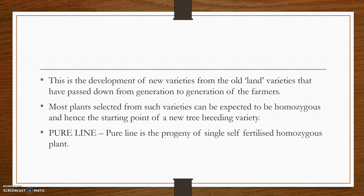Pure line selection may also be called single plant selection or individual plant selection. It is the identification and isolation of a single best plant from among a progeny for the development of a new variety — that is, we select only a single best plant from the lot of plants generated.